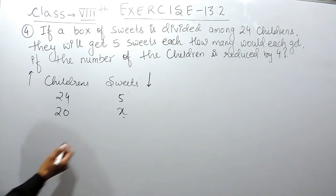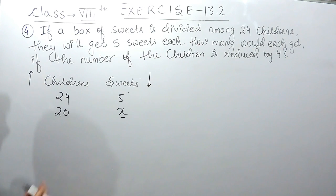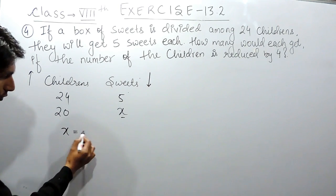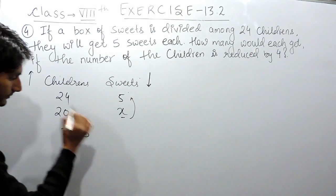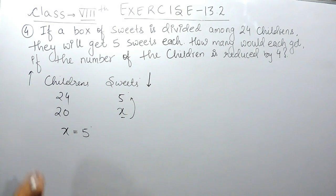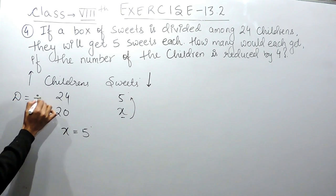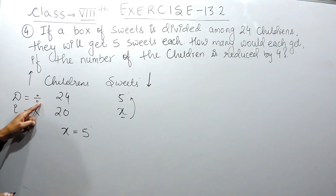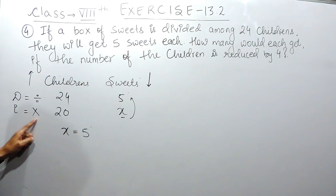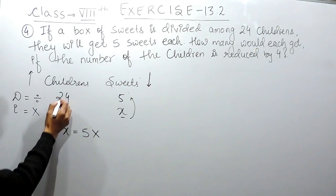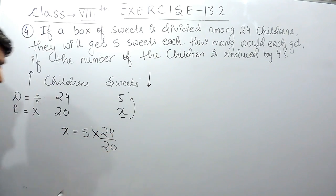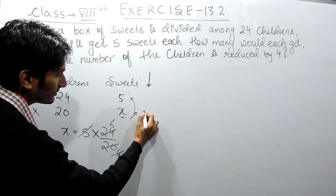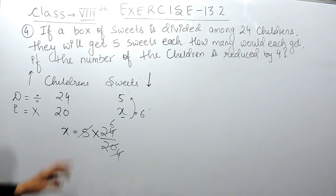This can be solved in two ways. For Method 1, we write x equals the value above it. Remember: D for direct means divide, and I for inverse means multiply. Since this is inverse proportion, we multiply. So x equals 5 multiplied by 24 over 20. Simplifying: 4 times 6 gives us x equals 6. Each person will get 6 sweets.